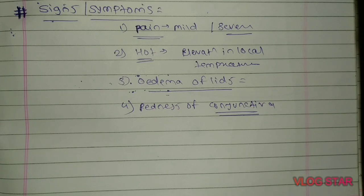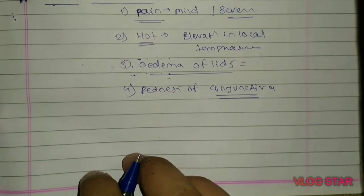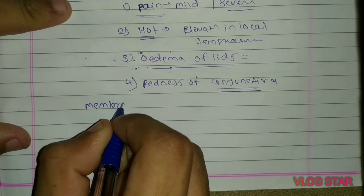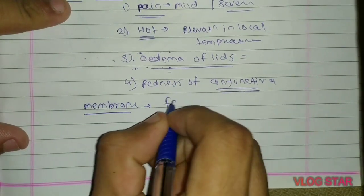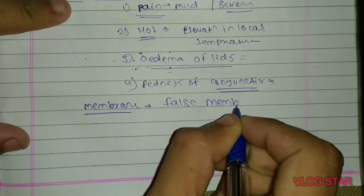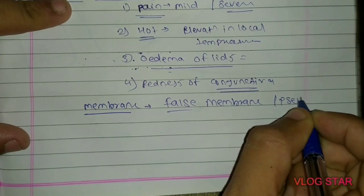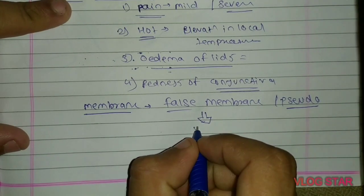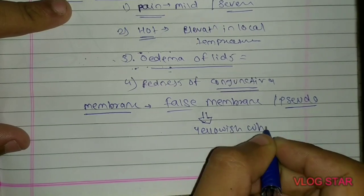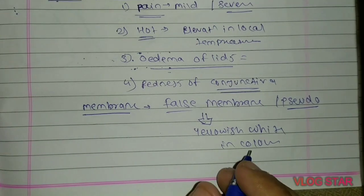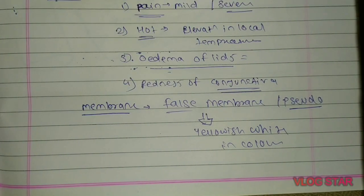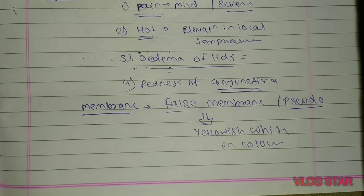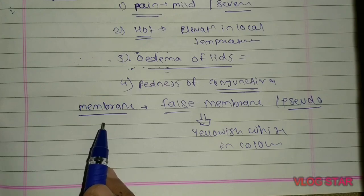Along with the acute inflammatory signs, there will be formation of a pseudomembrane on the palpebral conjunctiva, mainly on the tarsal conjunctiva. This membrane is yellowish-white in color, is not embedded in the palpebral conjunctiva, is 100% free from it, and any attempt to remove it will not cause any bleeding.